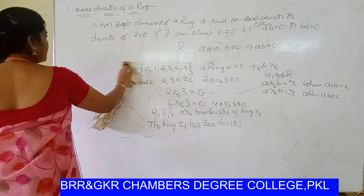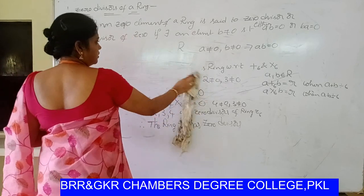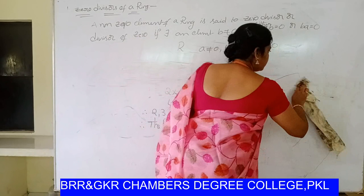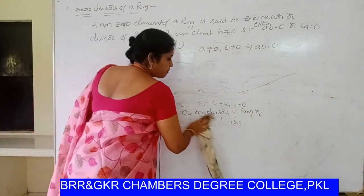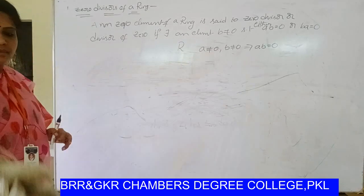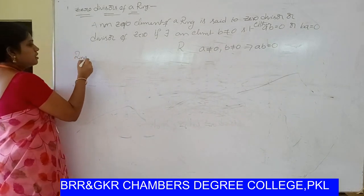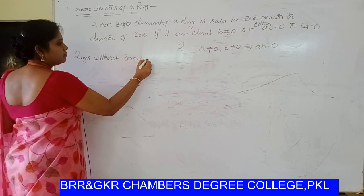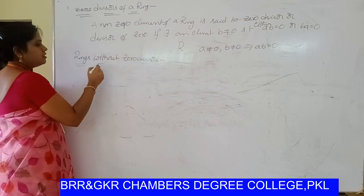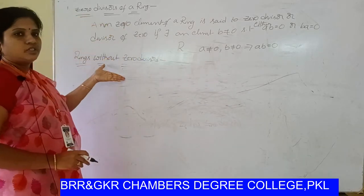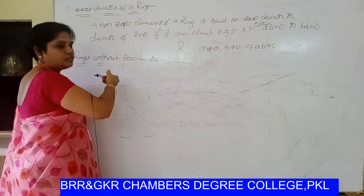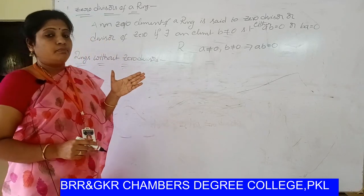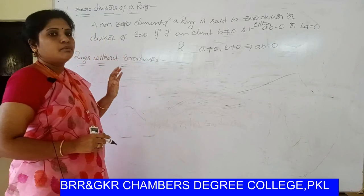Now we see the next definition: rings without zero divisors. This is the opposite of having zero divisors. In a ring with zero divisors, there exist two non-zero elements whose product is zero. In a ring without zero divisors, if the product of two elements is equal to zero, then one of these must be equal to zero.